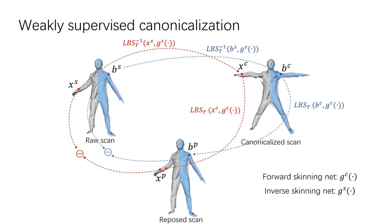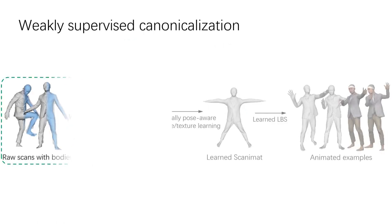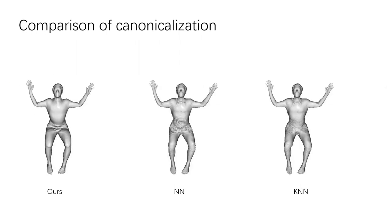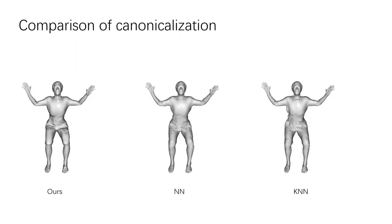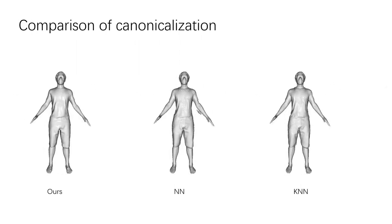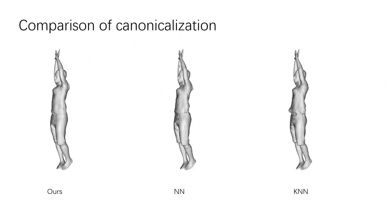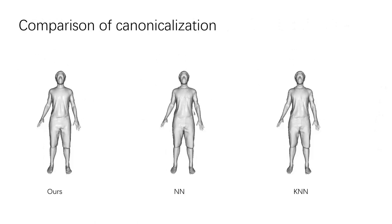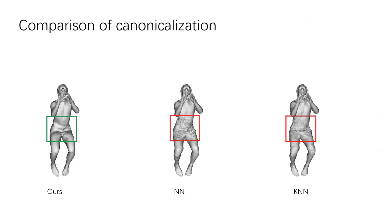After obtaining the skinning weights for the scanned surface predicted by the inverse skinning network, we transform the scans to canonical pose according to inverse linear blend skinning. Compared with baseline methods using only the fitted body as guidance, our approach using geometric cycle consistency achieves accurate and smooth canonicalization as well as reposing.